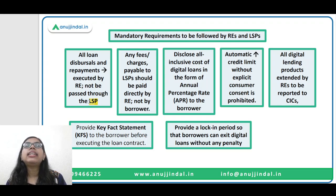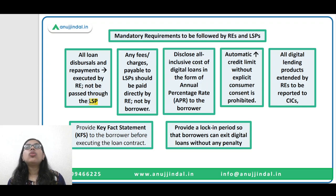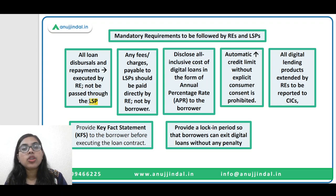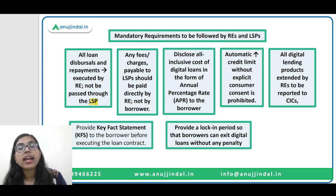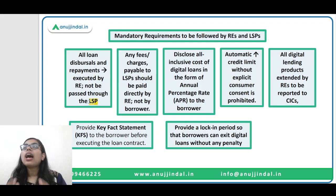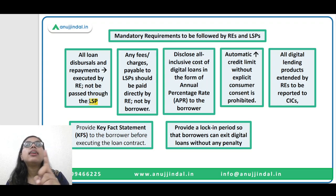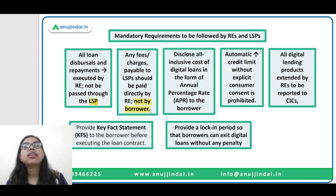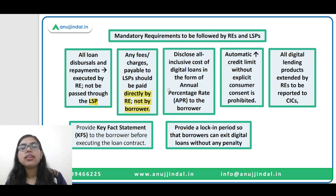The second mandatory requirement talks about any type of fees or charges. The lending service providers provide services like customer acquisition, consumer complaint resolution, and grievance handling - and for all these services they ask for certain fees, commissions, and charges. These charges need to be paid by the regulated entities and not the borrower. So whatever charges LSPs levy, the borrower will not pay them. They will be paid directly by the regulated entities.